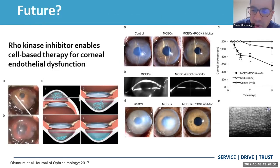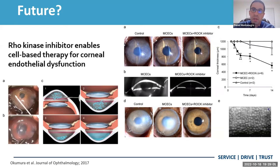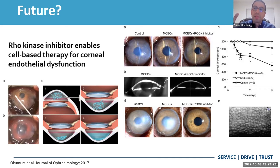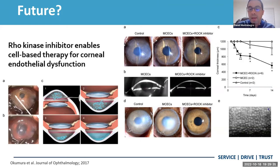What does the future hold? Perhaps in the future we might not have to do cornea transplants to treat endothelial cell dysfunction. We might be injecting endothelial cells into the anterior chamber using Rho kinase inhibitors, which might make corneas clear by replenishing endothelial cells. Rho kinase inhibitors have been shown to promote migration of endothelial cells. These studies have been ongoing in many parts of the world, primarily in Japan, as seen in this 2010 study by Okumura.